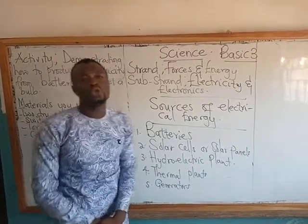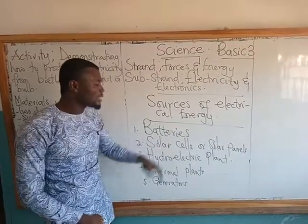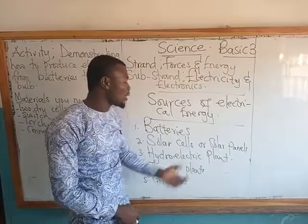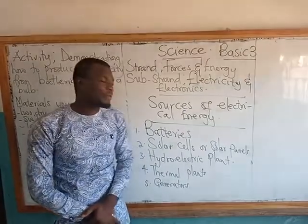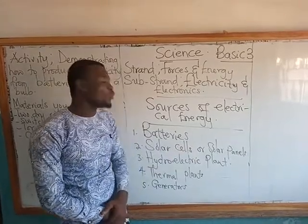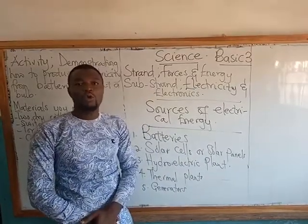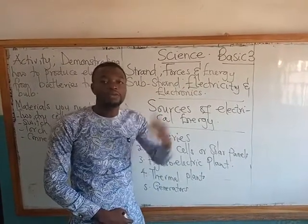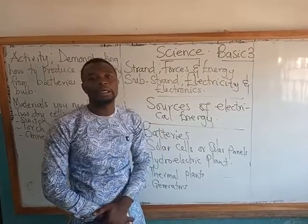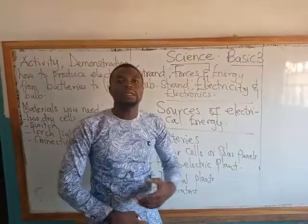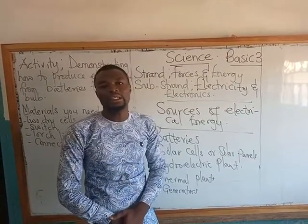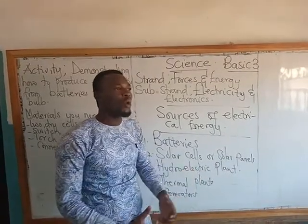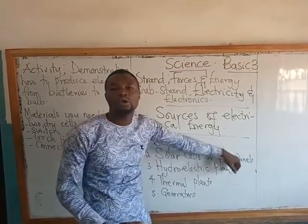We also have solar cells or solar panels as a source of electrical energy. This energy is derived from the heat of the sun. Before we are able to power our homes using this method, we need what we call the solar panel. Solar panels are usually kept on top of buildings — on the roofs — so that they will be able to absorb the sun's rays. When the sun rays are absorbed, they are then transformed into electrical energy for our homes. So the sun is basically a source of energy, and what we use to capture this energy is the solar cells or solar panels.